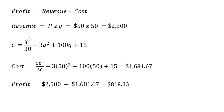Finally, let's calculate profit at 50 units of output. Revenue is price times quantity: the going market price of $50 times Q equals 50 gives $2,500 of revenue. To calculate the total cost of producing 50 units, plug in 50 for Q into the cubic cost equation and simplify. Then revenue minus total cost gives you the level of profit.